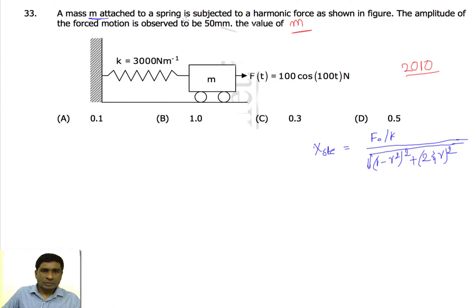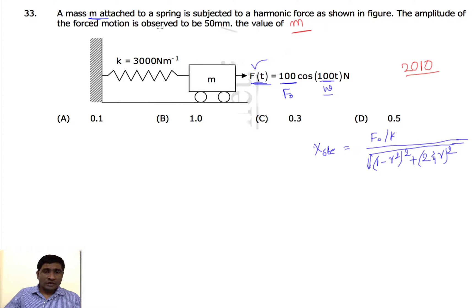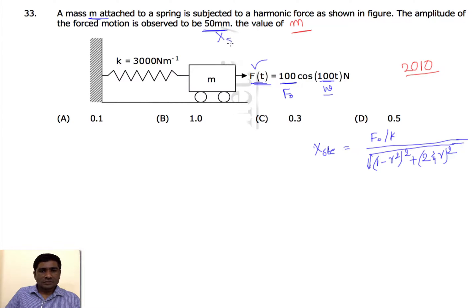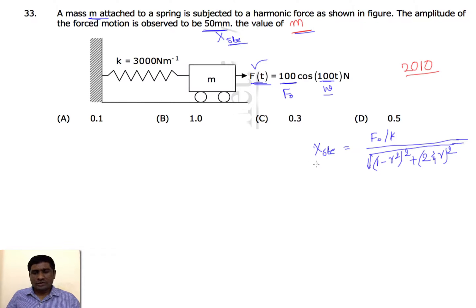In the next problem, a mass m is attached to a spring and externally excited by a force. The force is given as 100 sin(100t), so F₀ = 100 N and ω = 100 rad/s. The amplitude of forced motion is given as 50 mm. In forced vibration, this is taken as the steady-state amplitude. We need to find the mass m.